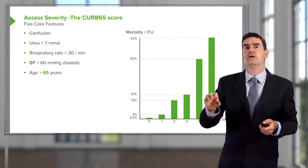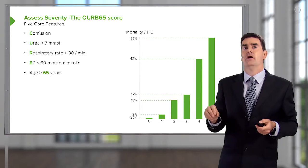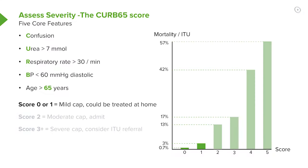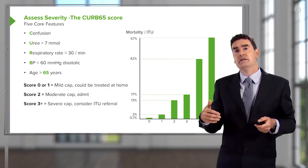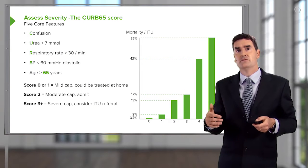That score defines the severity and the mortality — the chance of death — with that episode of pneumonia. For example, if you have a score of 0 or 1, the chance of death is less than 1%, which is very mild disease, and most of those patients can be treated at home. A score of 2 is moderate community-acquired pneumonia; most of these patients will need to come into hospital, and the mortality is about 13–15%, which is quite significant.